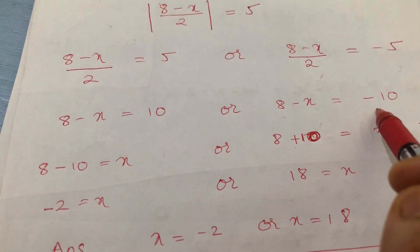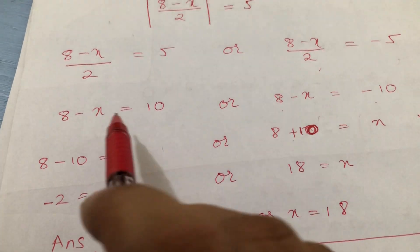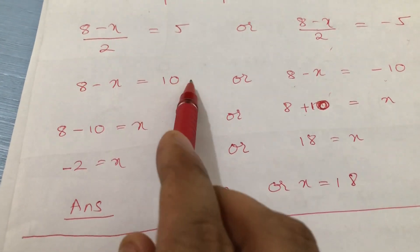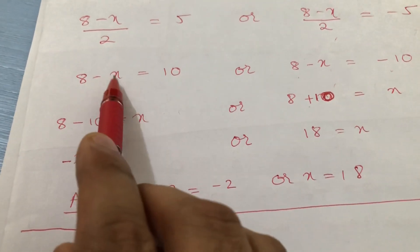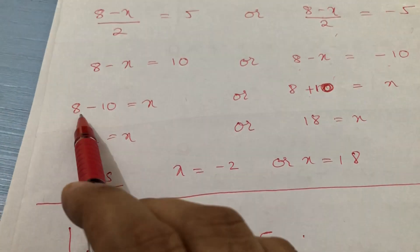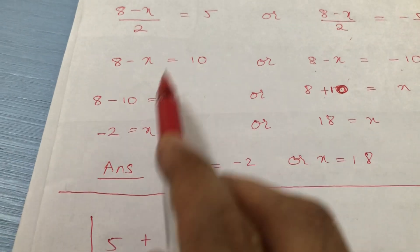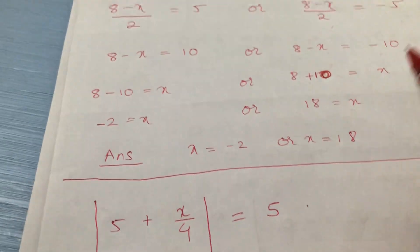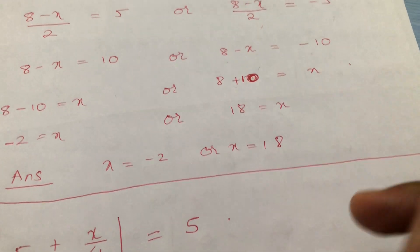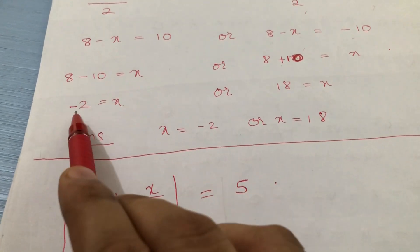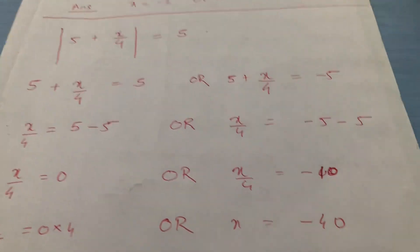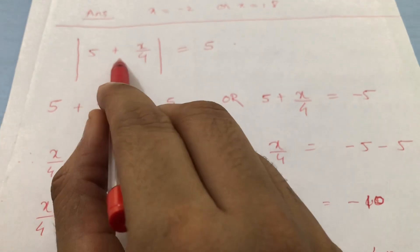Multiply both sides by 2: 8 minus x equals 10, or 8 minus x equals minus 10. Since x has a minus sign, it's easier to move x to the other side. So 8 minus 10 equals x, giving x equals minus 2. Similarly, 8 minus (minus 10) gives x equals 18.